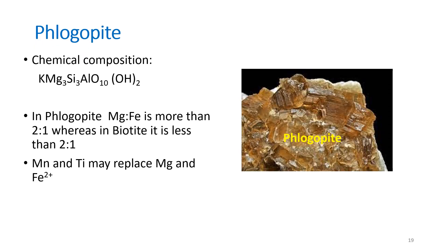Phlogopite has the chemical composition KMg₃(Si₃Al)O₁₀(OH)₂ — a potassium magnesium aluminosilicate with water. The key distinction: in phlogopite the magnesium-to-iron ratio is greater than 2:1, whereas in biotite it is less than 2:1. Manganese and titanium may also replace magnesium and iron in the structure.